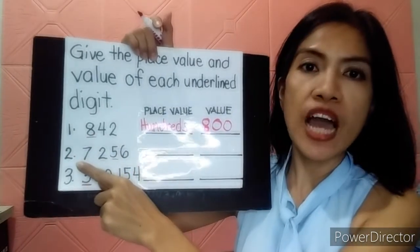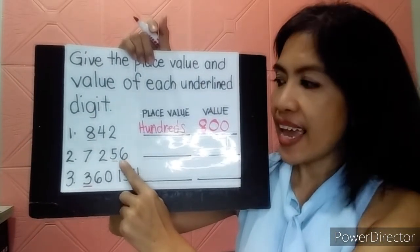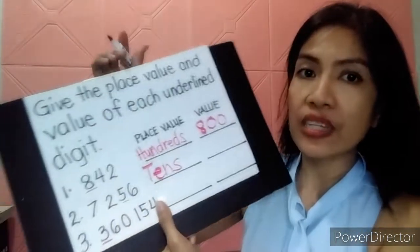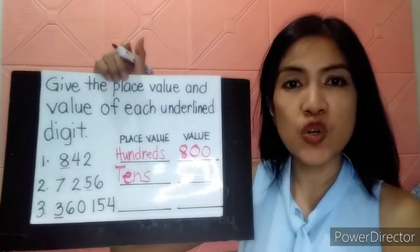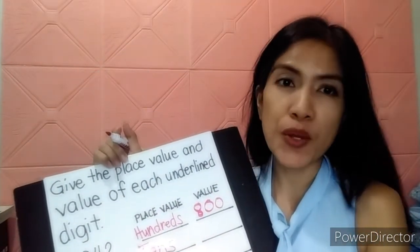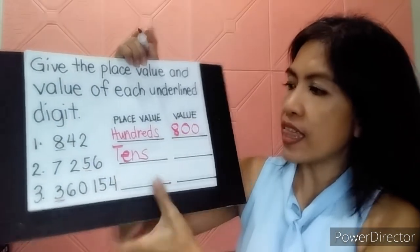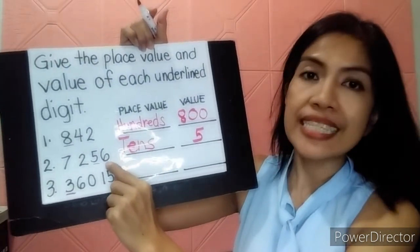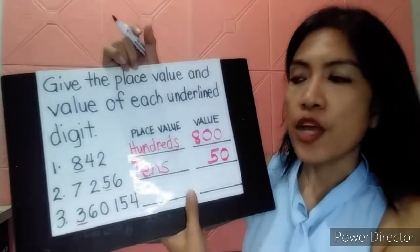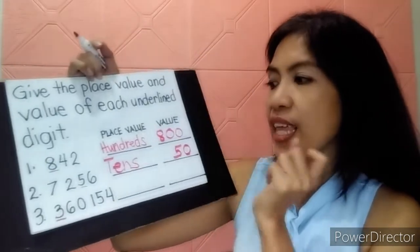Let's go to the next one. We have 7,256 and the underlined number is five. So we count ones and tens — it's tens. Always remember there should be an S at the end; if you forget the S, it's wrong and it's no longer a place value. Copy the five for the value and change the six to zero. The place value of five is tens and the value is 50.